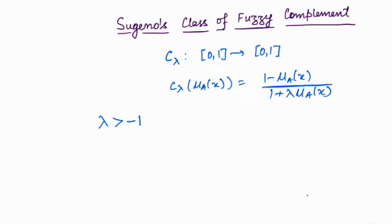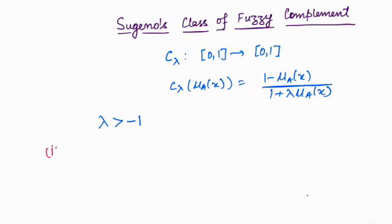Let us see whether this function satisfies the axioms of a complement which we discussed in the last lecture. Let us check the axioms. Axiom number 1 states it has to be monotonic — that is, monotonically decreasing.